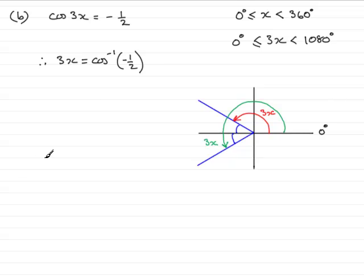So, at this point, what I need to do is just work out what 3x can be by taking the inverse cos of minus a half. And if you do that on the calculator, what you get is 120 degrees.